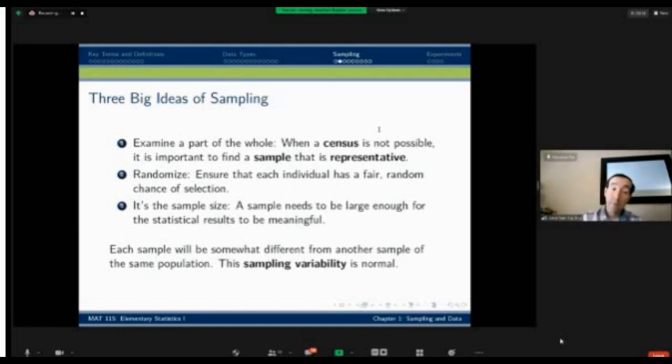I want to make sure that you keep this in mind every time we construct a sample. Every time we construct a sample, even if we use the same method from the same starting points, we may end up with a slightly different group in our sample. And that slightly different group may have slightly different values of this statistic. That sampling variability is what that is called. It's completely normal.